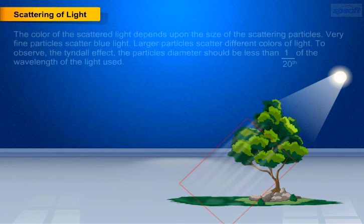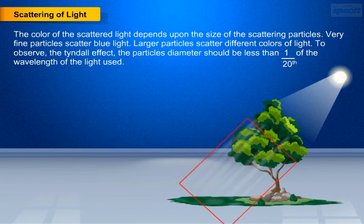The color of the scattered light depends upon the size of the scattering particles. Very fine particles scatter blue light. Larger particles scatter different colors of light.